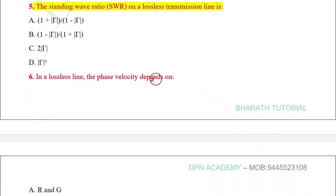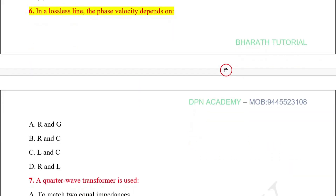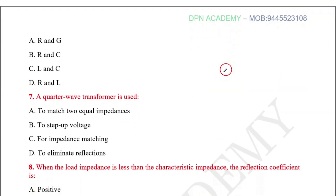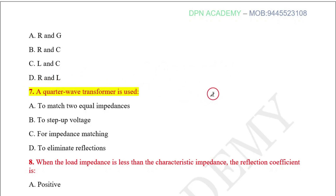Question number six: In a lossless line, the phase velocity depends on? Question number seven: A quarter wave transformer is used?